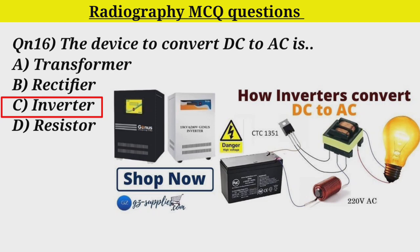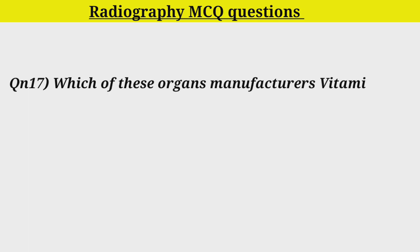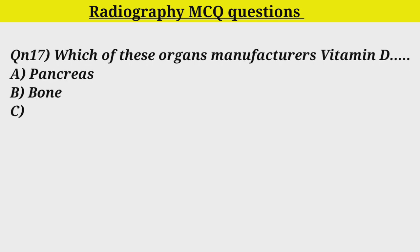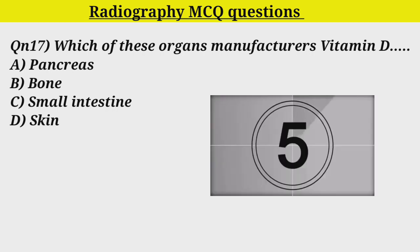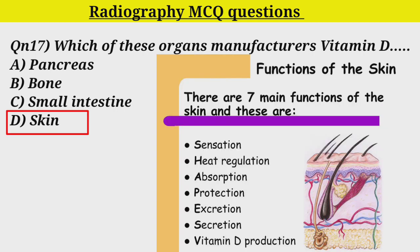Q17. Which of these organs manufactures Vitamin D? Option A. Pancreas. Option B. Bone. Option C. Intestine. Option D. Skin. Correct answer is Option D. Skin.